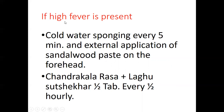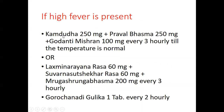For high fever persistent above 102 degrees Fahrenheit, cold water sponging is essential every five minutes. External application of sandalwood paste on the forehead is recommended. Chandrakala Ras plus Laghu Suta Shekhar — half tablet every half hour with honey and ghee. Another prescription for high fever: Kamadudha with Praval and Godanti — given every three hours until temperature normalizes. For very high fever: Lakshmi Narayana Ras 60mg, Sarva Suta Shekhar Ras 60mg, and Mrigashringa Bhasma 200mg every three hours, with Gorochanadi Gulika — 1 tablet every two hours.